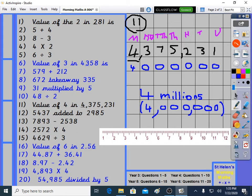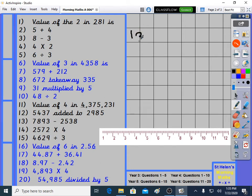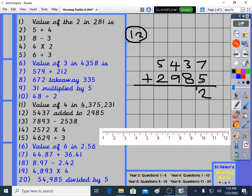Time for question 12. Question 12. 5,437 added to 2,985. 4 digits plus 4 digits. 7 plus 5 is 12. 3 plus 8 is 11, plus 1 is 12. 4 plus 9 plus 1 is 14. 5 plus 2 is 7, plus 1 is 8. 8,422. Just checking over that.